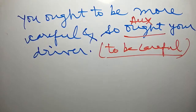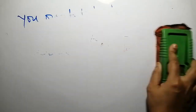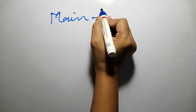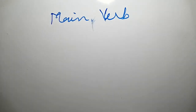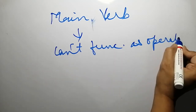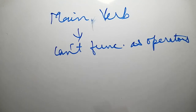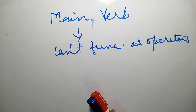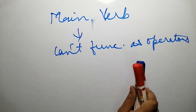These four features — auxiliaries in yes/no questions before the subject, attaching n't in abbreviated form, placing adverbs after the first auxiliary, and standing for the whole predicate — are the special and important features of auxiliaries. This is why auxiliaries are called operators. Main verbs, however, cannot perform these operator functions. The main verb cannot function as an operator.